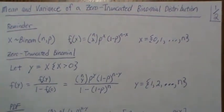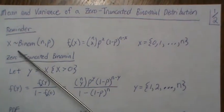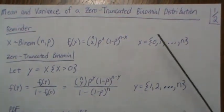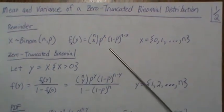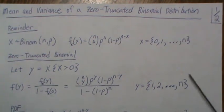As a quick reminder, if X is binomial n, p, then the probability mass function is n choose x times p to the x times (1 minus p) to the (n minus x), where x goes from 0 to n.